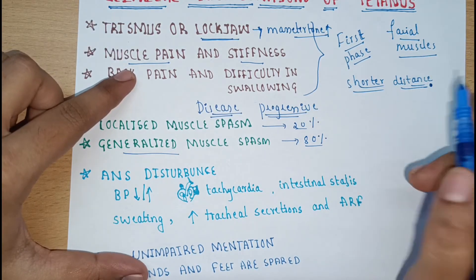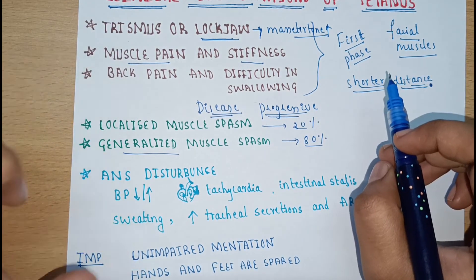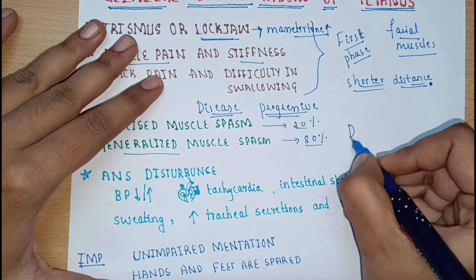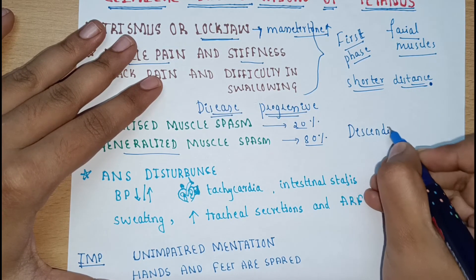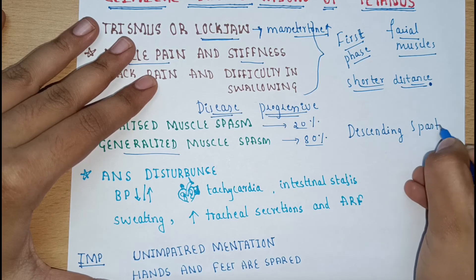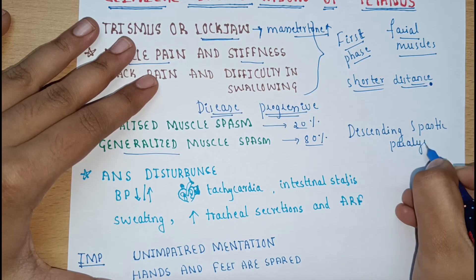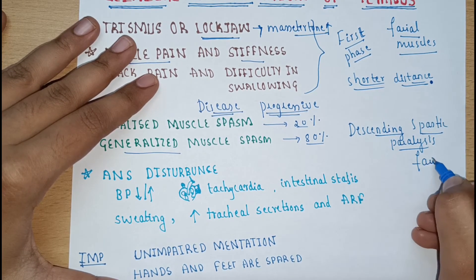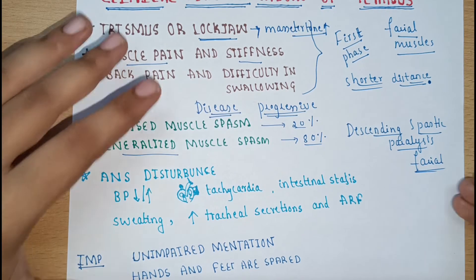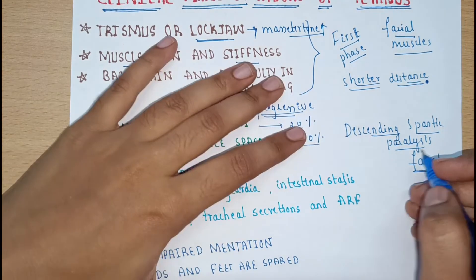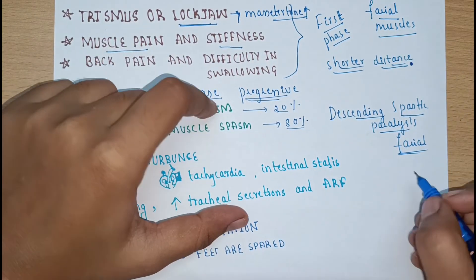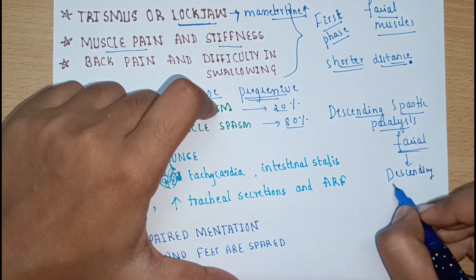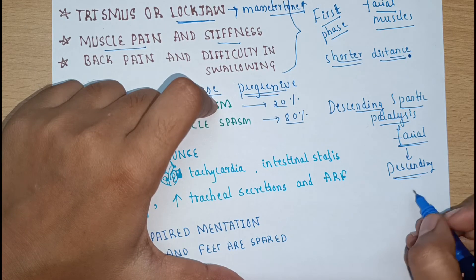Localized means, for example, if the lower limb has been injured, the muscle spasm is seen only in that part. In generalized muscle spasm, there is descending spastic paralysis — first the facial and proximal muscles get affected, producing lockjaw and a rigid smile appearance, then the upper limb and lower limb muscles get paralyzed. This occurs during the progressive stage.